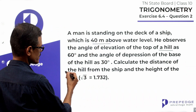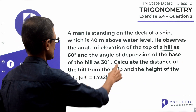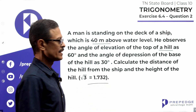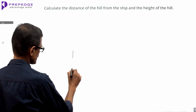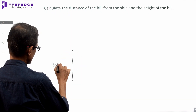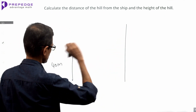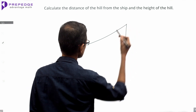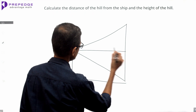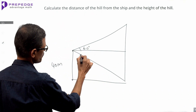We need to calculate the distance of the hill from the ship, and the height of the hill. Take root 3 equal to 1.732. Let's set up the diagram: this is the water level, this is the deck of the ship 40 meters high, this is where the man is standing, observing both the top and the bottom of the hill.